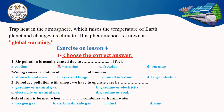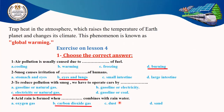Let's exercise. Air pollution is usually caused due to the burning of fuel — not cooling, not warming, not freezing — but burning fuel. Question number two: smoke causes irritation of eyes and lungs of humans. To reduce pollution from smoke, we have to operate cars with electricity or natural gas. Acid rain is formed when carbon dioxide gas combines with water.